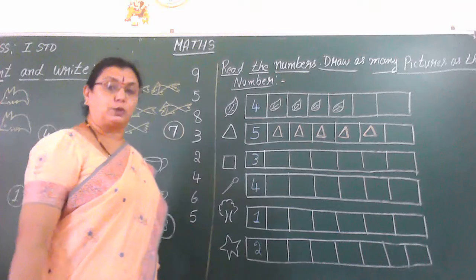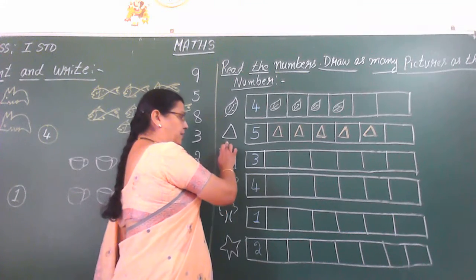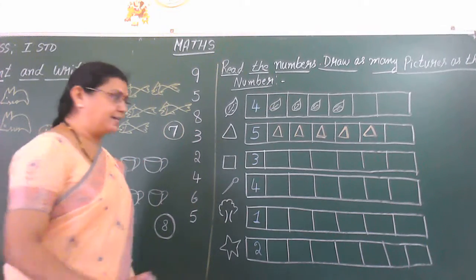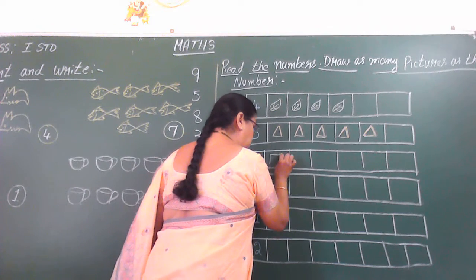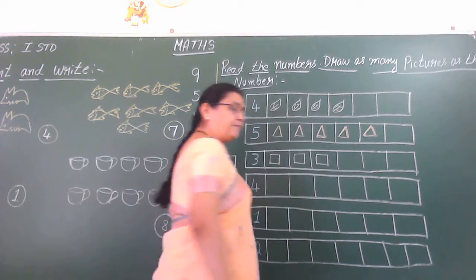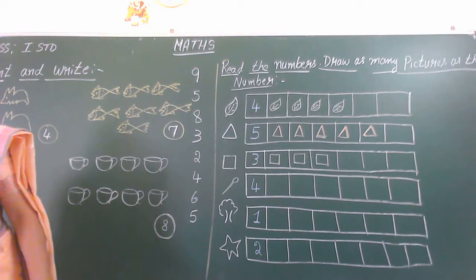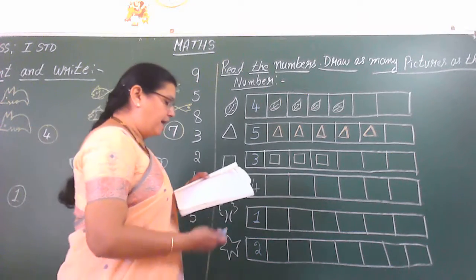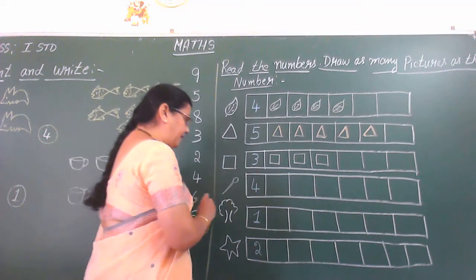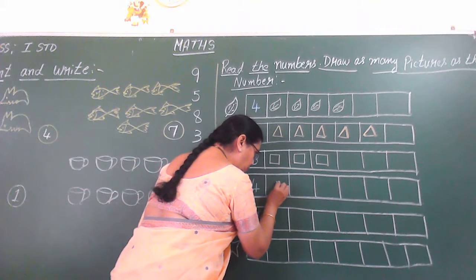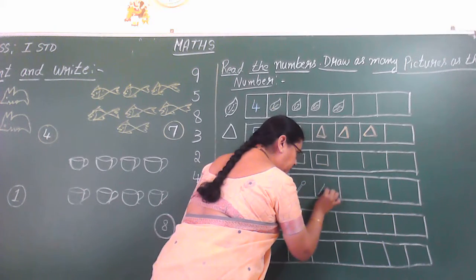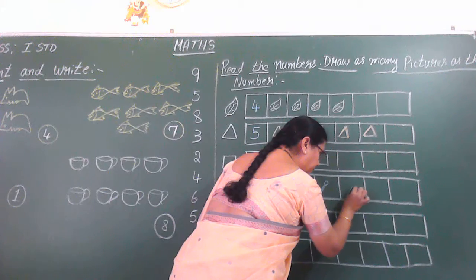Next, what they have given? Square. This is square shapes. How many do we have to draw there? Which number they have given? They have given three. So we have to draw three squares: one, two and three. Are you drawing children? Keep your pencil with you. You can start drawing. And next, they have given four — that is spoon. How many spoons do we have to draw? Four. So one, two, three, four.